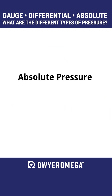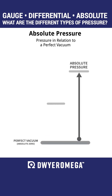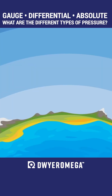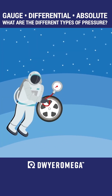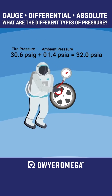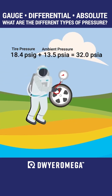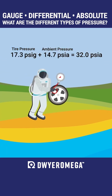Absolute pressures can be defined as the pressure measured in relation to a perfect vacuum. You can determine absolute pressure by adding ambient pressure and gauge pressure. So if we filled the car tire pressure to 32 psig in outer space or in a perfect vacuum, and we brought it all the way back down to the surface of the earth, you'll see the car tire pressure drop to 17.3 psig in relation to local ambient pressure of 14.7 psig.